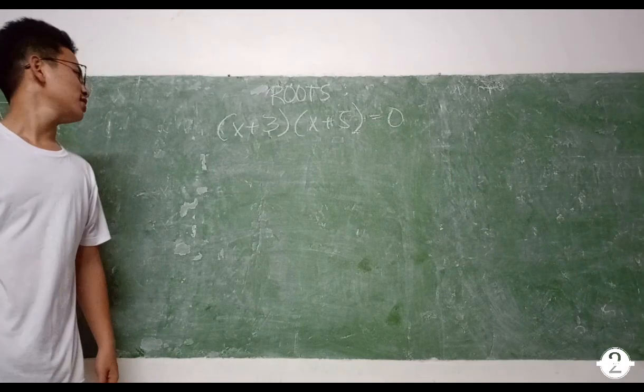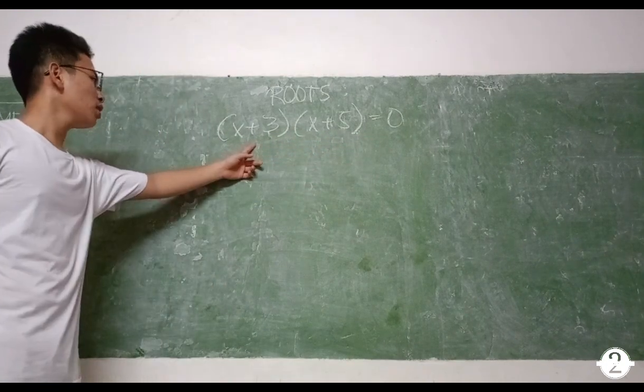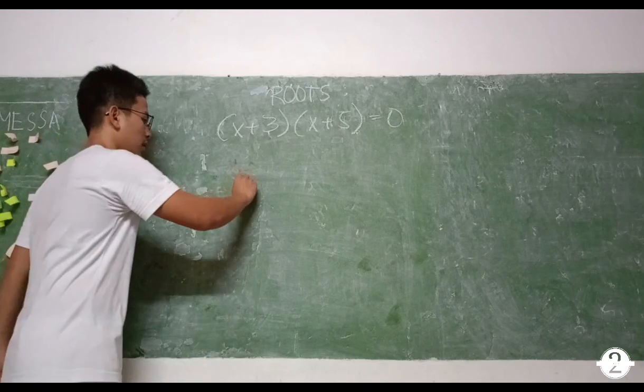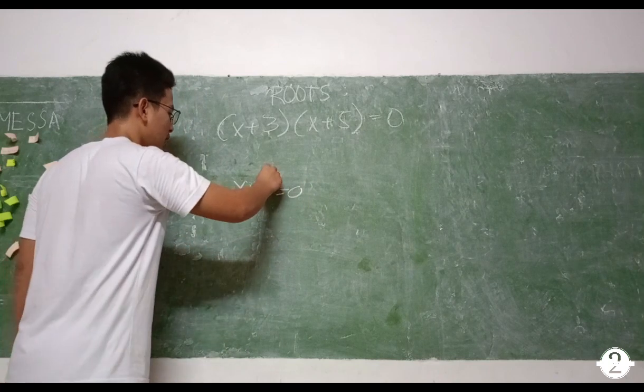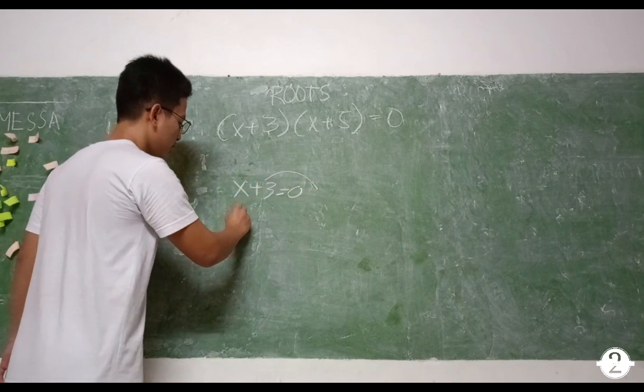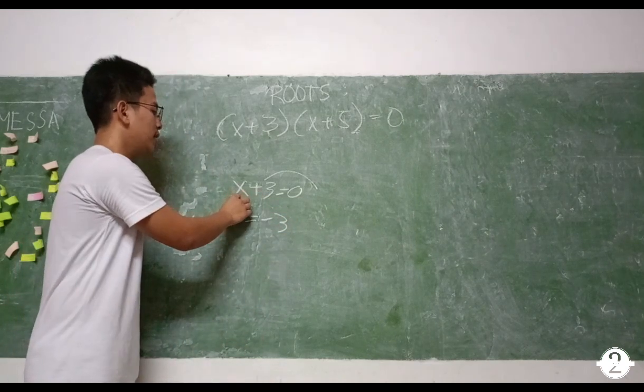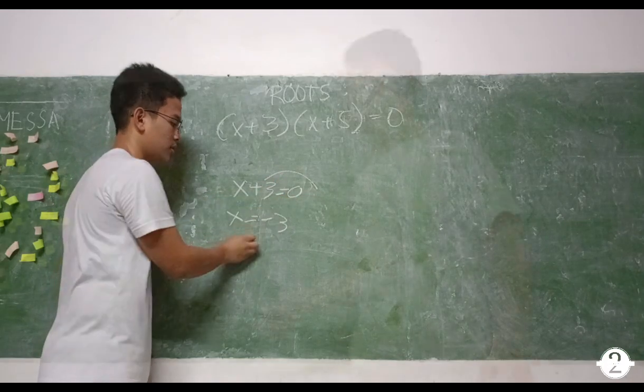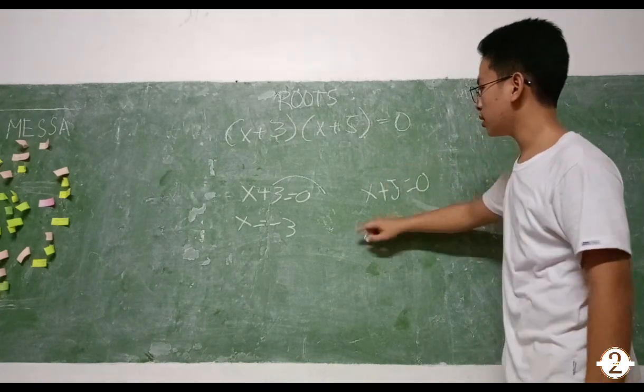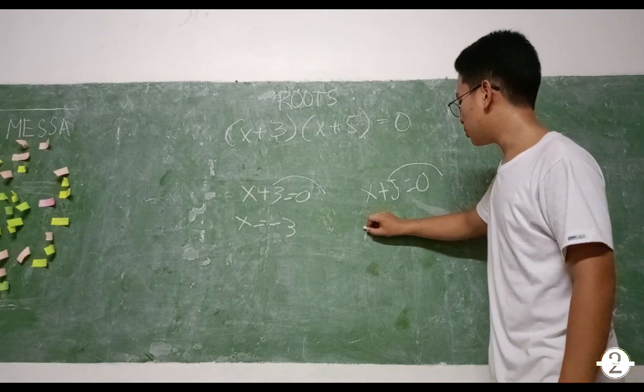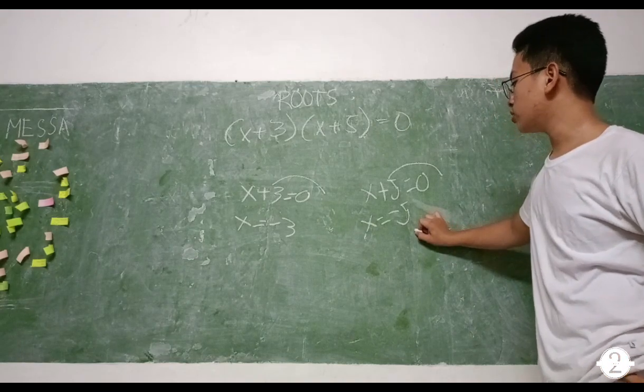Ganun ang mangyayari sa factor. Gawin naman natin yung solution dito. x + 3 times x + 5 equals 0. Para makasolution mo, kunin mo muna kung anong nasa loob ng parentheses. x + 3 = 0. Para maging negative, ilipat mo itong 3 sa kabila, so ang magiging sagot ay x = -3. Always remember, kapag positive ang given, ilipat mo ito sa kabila para maging negative ang answer. Next is x + 5 = 0. Ilipat mo ito sa kabila para maging negative, so magiging answer ay x = -5. Yun, ganu-ganun siya sa sagot natin sa quadratic equation formula.